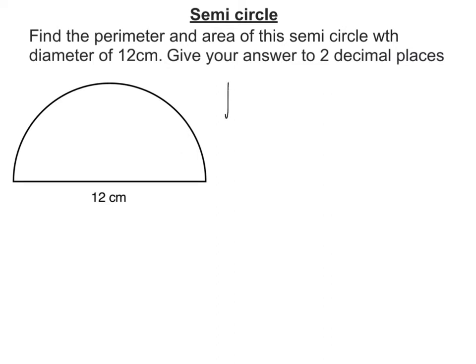So the perimeter, let's call that P, is going to include the curved bit. Well, that's half a circumference, so that's going to be pi times d over 2. And then to that we need to add on the straight bit. Now, we're told that's 12, so we're going to add 12 to it.